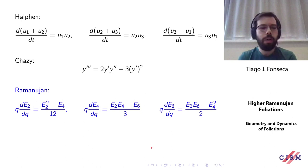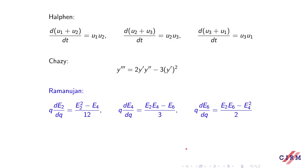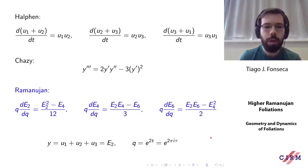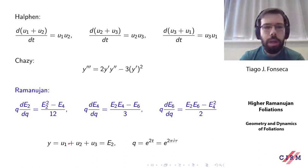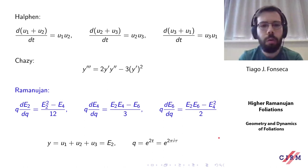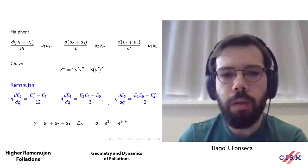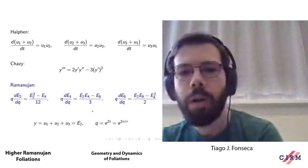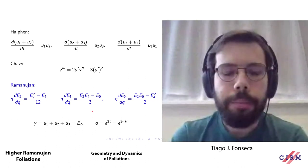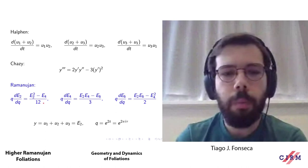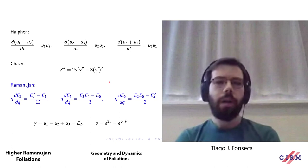These equations were discovered by different people at different times thinking about different problems, but it turns out they're essentially equivalent. Here in blue I put the Ramanujan equations — these are differential equations involving Einstein series, which are examples of quasi-modular forms, functions that appear in number theory. These are the equations I want to focus on because from the point of view of number theory they are somehow nicer.